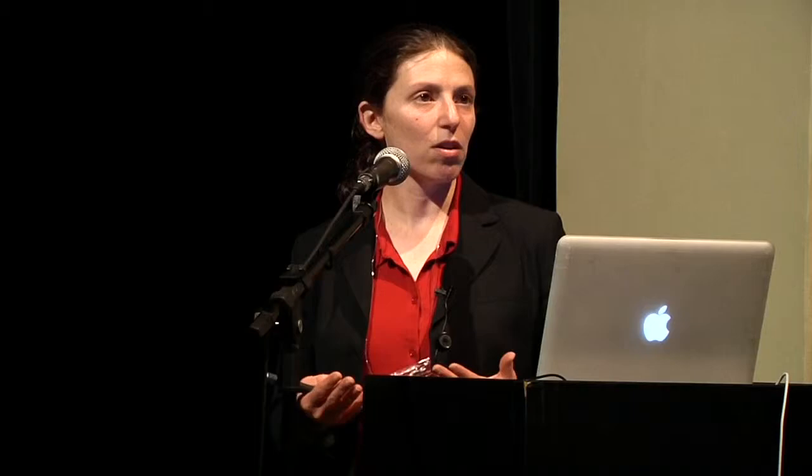Are there possibly other host genetic associations that could be made? Of course. In many of these genomic studies, only factors with a big influence will be seen, but rarer variants may not. These could also differ from platform to platform. Just in the last year, a couple of other genes have been described showing associations: PARD3B and RICH2. I believe there is a paper about another host gene coming in the Journal of Infectious Diseases next month. These genome-wide associations have really told us that the HLA and MHC play a large role in control of HIV, and we still need to keep looking for other factors.